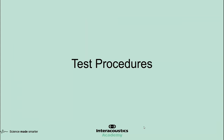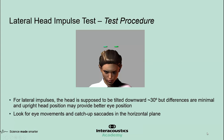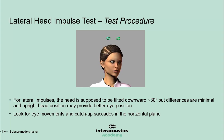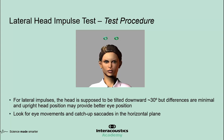Now let's discuss the test procedures. Technically, for head impulses, the head should be turned downward about 30 degrees to place the lateral canals in the horizontal plane. In practice, it's better to do the test with the head upright because the differences are minimal, and in the upright position the eyes are in a better position for recording. In the lateral test, we look for eye movements and catch-up saccades in the horizontal plane.